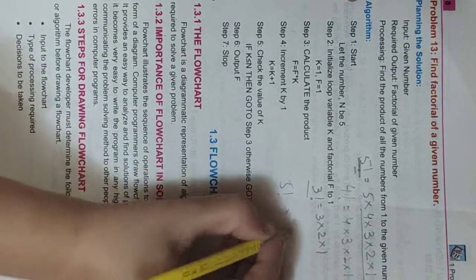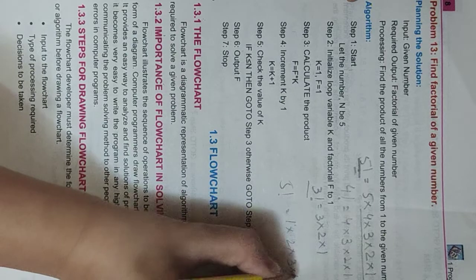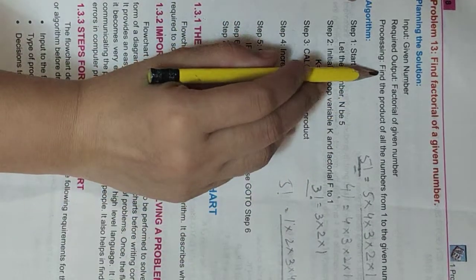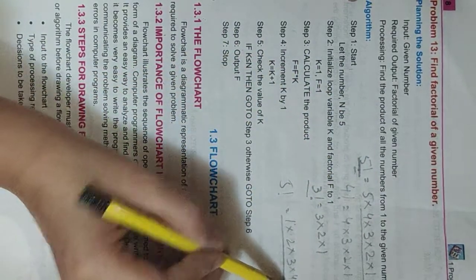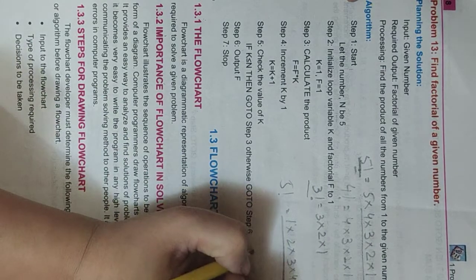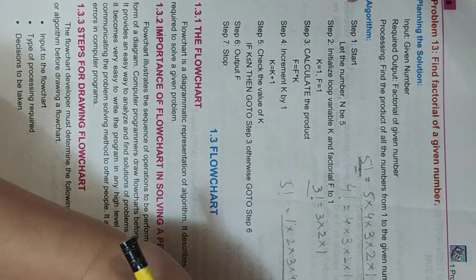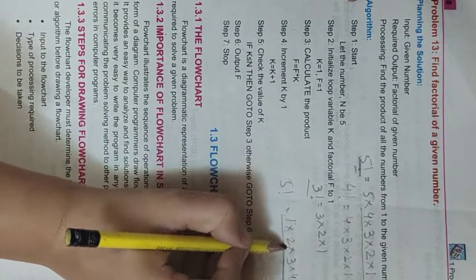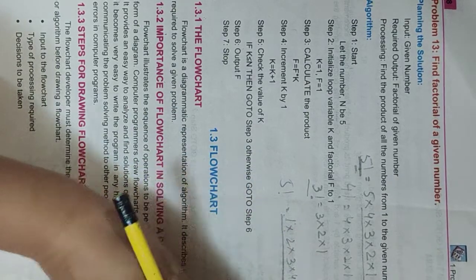If you write it like this: 1 multiplied by 2, multiplied by 3, multiplied by 4, multiplied by 5, you will get the same number. Find the product of all numbers from one to the given number. The given number means the number the user has entered, which is 5. So from 1 to the given number we find the product: 1×2, 2×3, 3×4, and finally multiplied by 5.